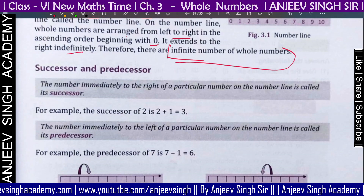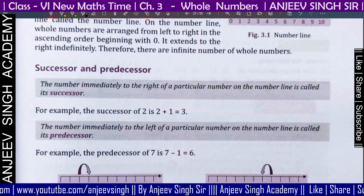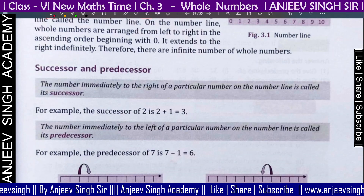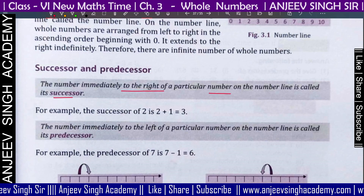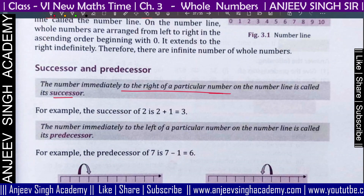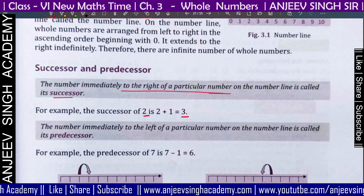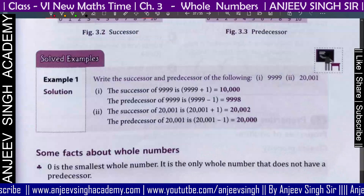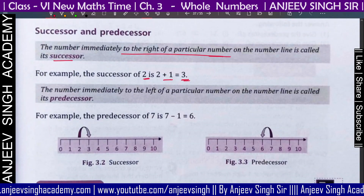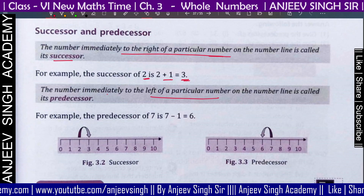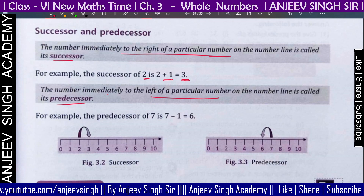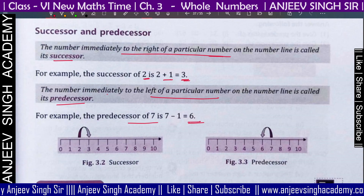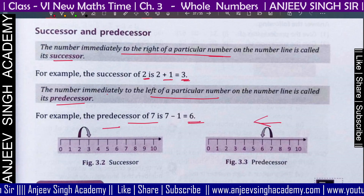Next, we are going to talk about the successor and predecessor. The successor of 2 is 3. The predecessor of 7 is 6. So the predecessor means we go to the left, and the successor means we go to the right on the number line.